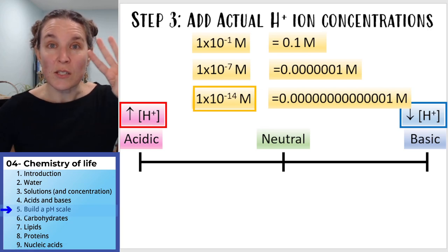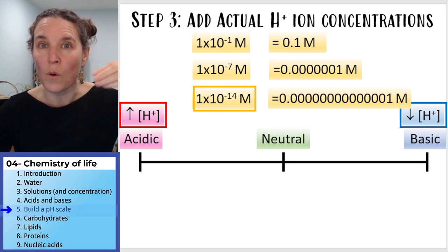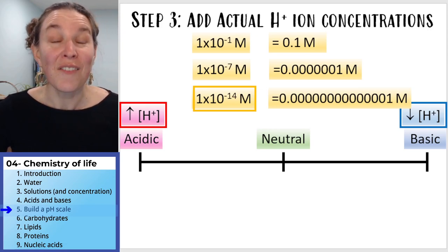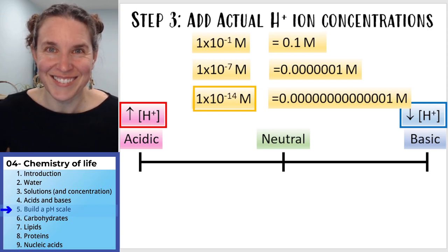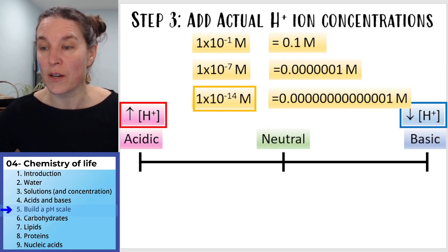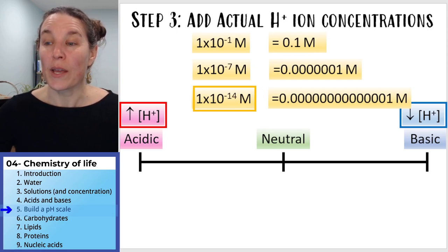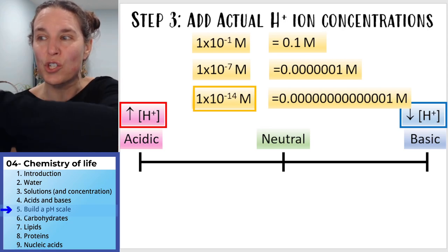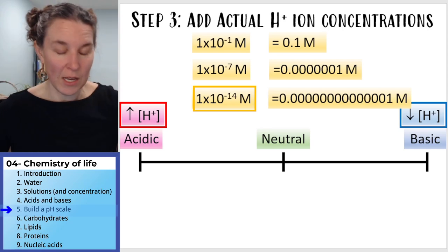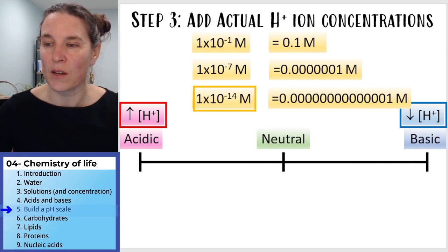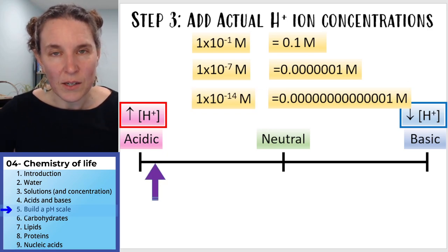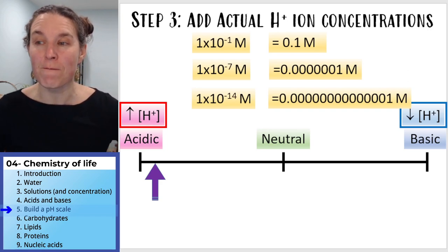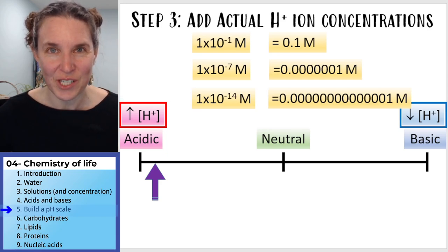So we have three different concentrations: a tenth of a mole, one ten-millionth of a mole, and 100 trillionths of a mole of hydrogen ions in a liter of water. Are you getting a sense of where the biggest concentrations are? Now I want you to add those molar numbers to your chart — one is going to fit on each line. Which concentration fits where we want a higher concentration of hydrogen ions?